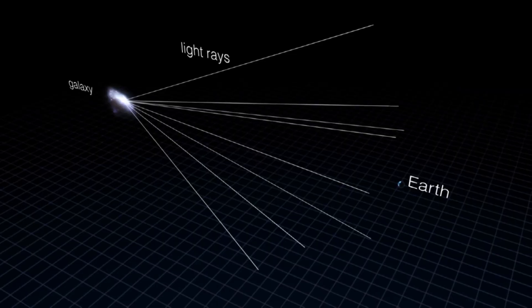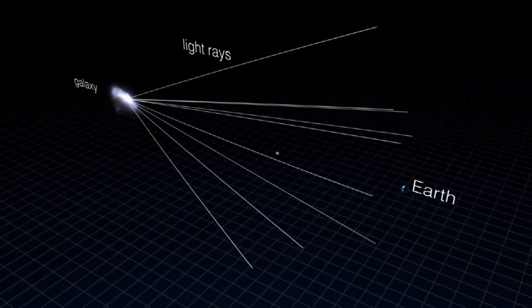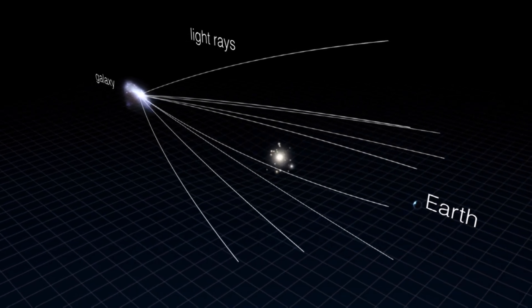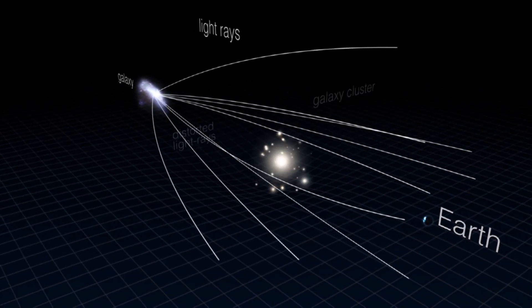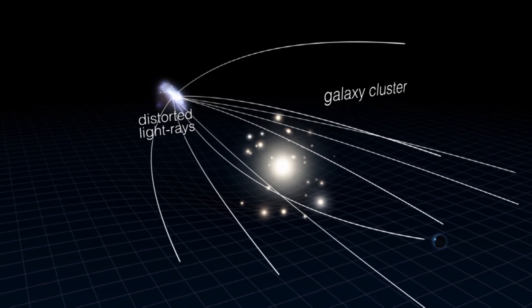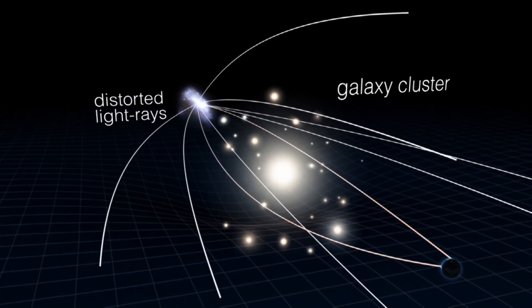Einstein's theory of general relativity is really what predicted these Einstein rings in the first place. He created this whole machinery for how gravity is supposed to work. Matter would tell spacetime how to curve and spacetime would tell matter how to move.